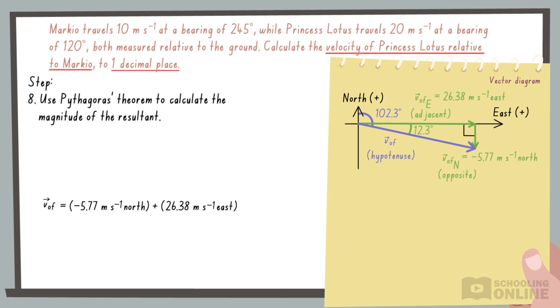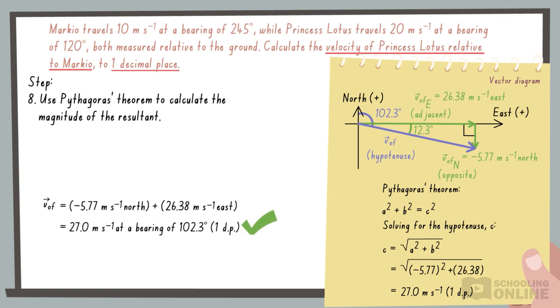Finally, we apply Pythagoras' theorem to find the vector's magnitude. Overall, her velocity is 27.0 metres per second at a bearing of 102.3 degrees relative to Markio.